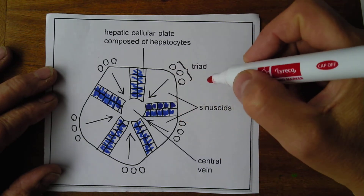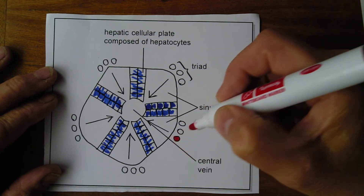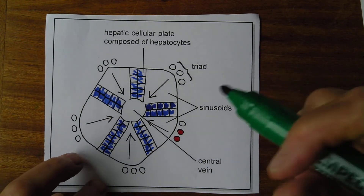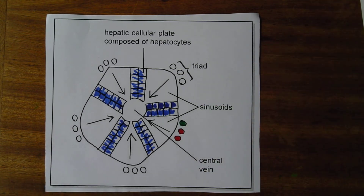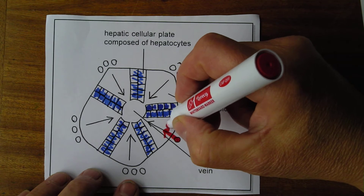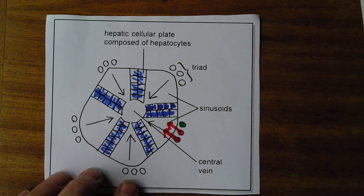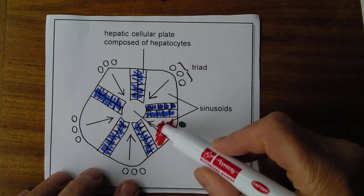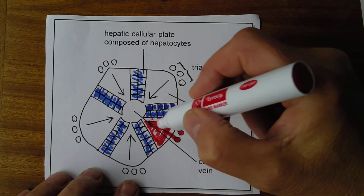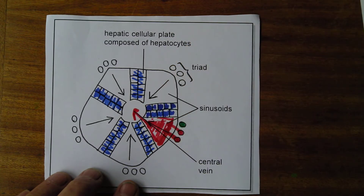Around the outside on the corners of the lobules we have a branch of the hepatic artery, a branch of the hepatic portal vein, and a bile channel. The blood from the hepatic portal vein and the hepatic artery goes into the area of the liver sinusoid. The blood passes down through the sinusoid into the central vein for drainage, so the blood is flowing from the outside inwards.